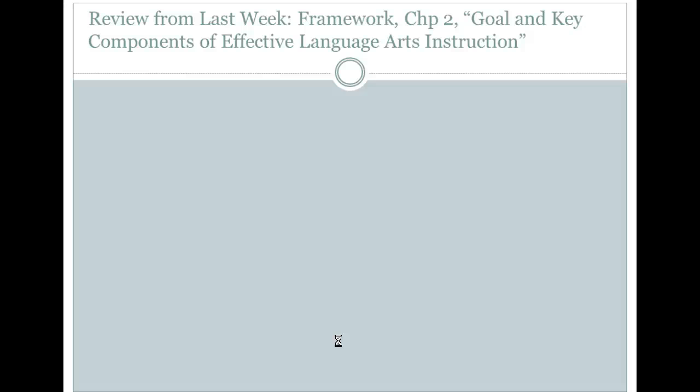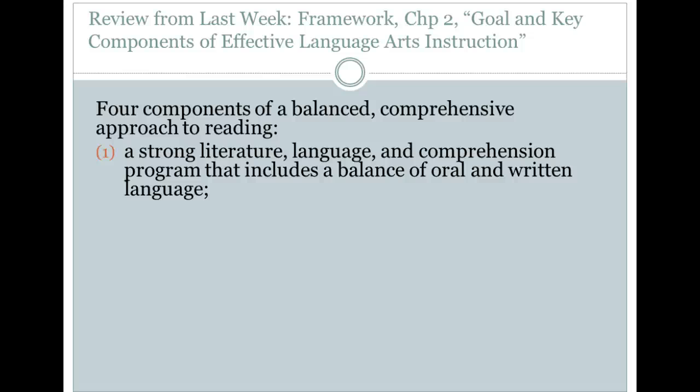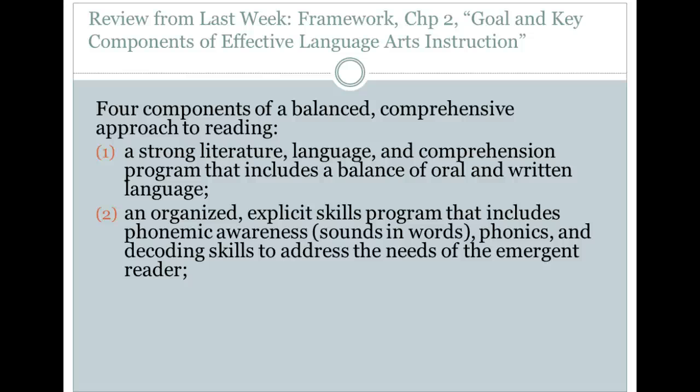Let's talk about chapter two of the existing framework, titled 'Goal and Key Components of Effective Literacy Instruction.' They identify four components of a balanced, comprehensive approach to reading. First, we need a strong literature, language, and comprehension program that includes a balance of oral and written language. Oral language is so important — students often aren't doing the discourse and participation in discussions that they need. Second, we need an organized, explicit skills program that includes phonemic awareness, sounds and words, phonics, and decoding skills to address the needs of the emergent reader.